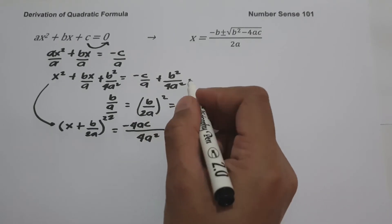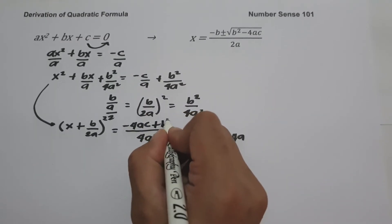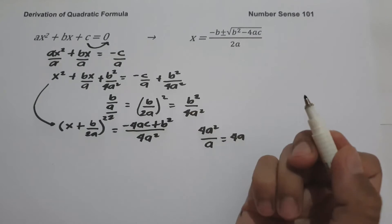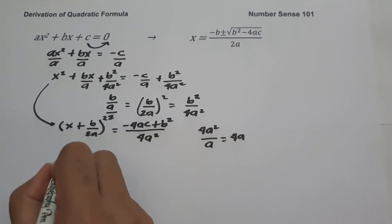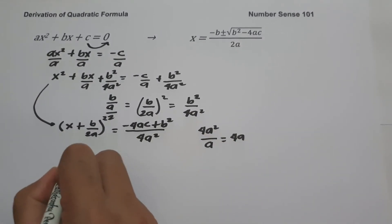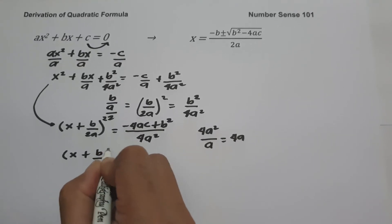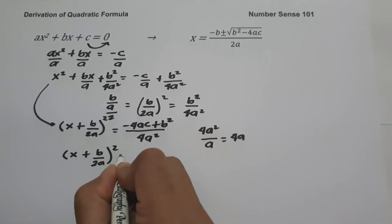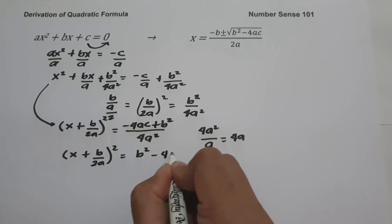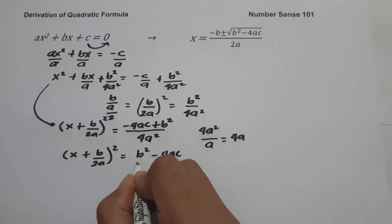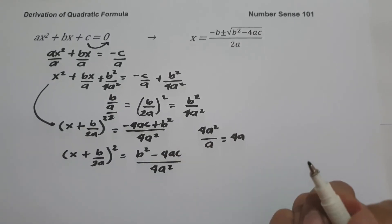Multiplying 1 by b² gives b². Rearranging, we write: (x + b/2a)² = (b² − 4ac) / 4a².